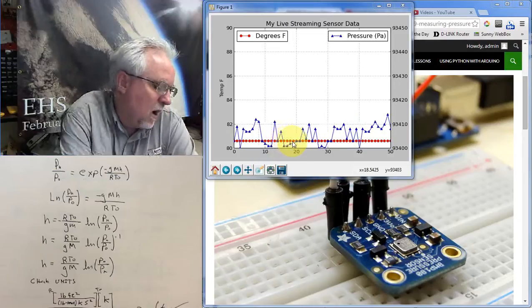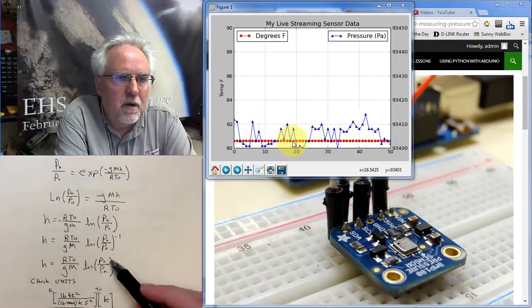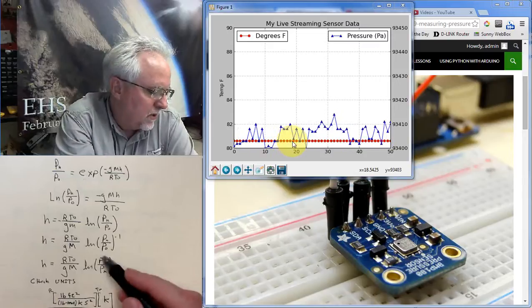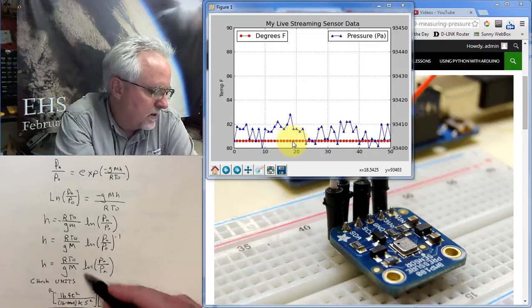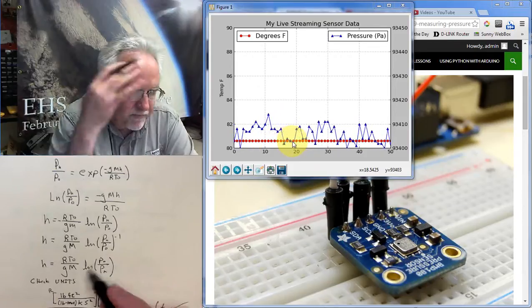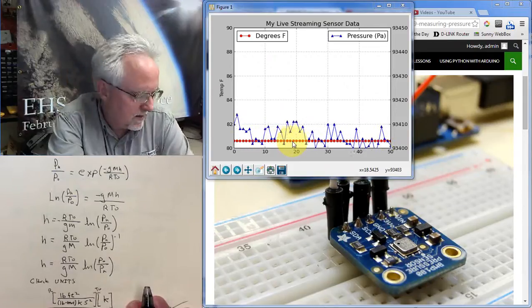P0 on the floor was larger than P0 up here, and so, or P up here. So this is going to be a number greater than 1, so this number is going to be positive, and H is positive. So just check and make sure I didn't do something goofy with the sign. Yes, it works.